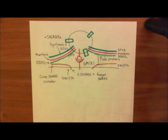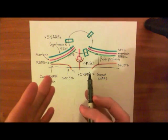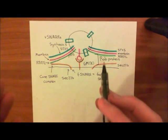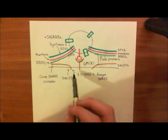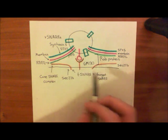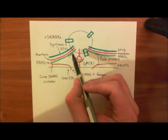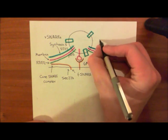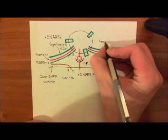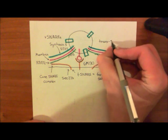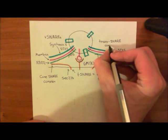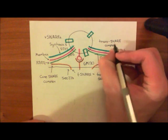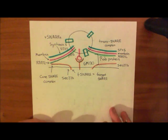Now, some more terminology with regard to SNARE complexes. When you have these three V-SNAREs in the vesicle and this T-SNARE in the Golgi membrane — i.e., they are in different membranes — this arrangement is known as a trans-SNARE complex. Trans means across, so they're across different membranes.